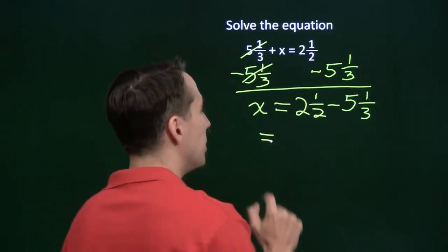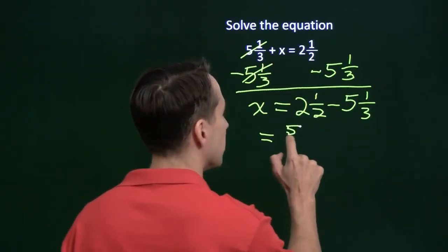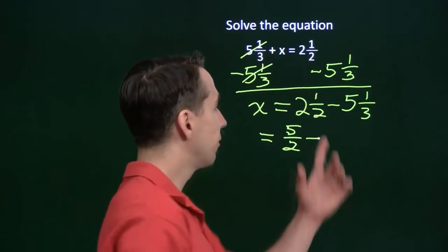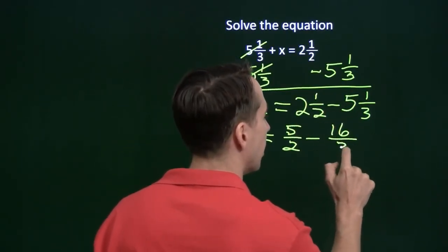And now we have something we know how to handle. We can do the subtraction here. We turn the mixed numbers into fractions. 2 and a half is 5 halves. And the 5 and a third, 5 times 3 is 15, plus the one that gives us 16 thirds there.